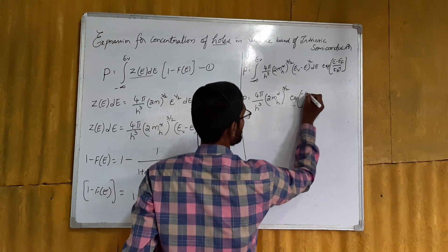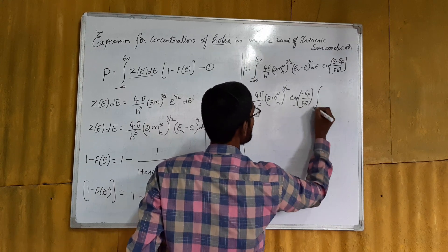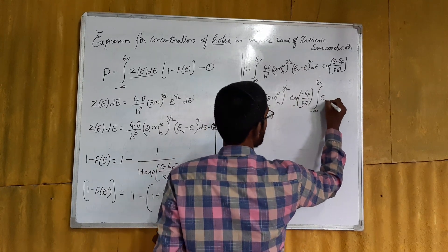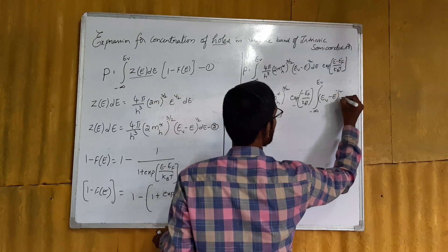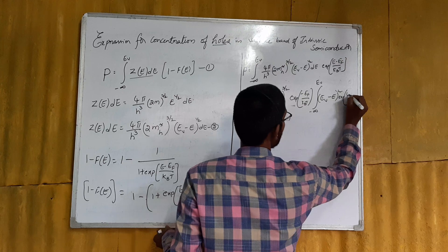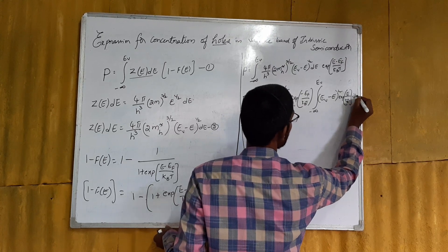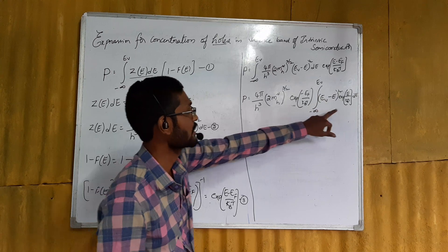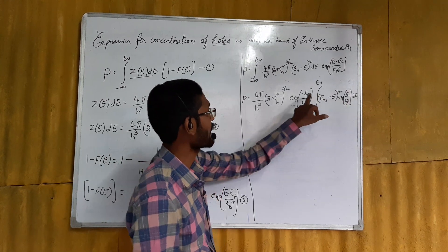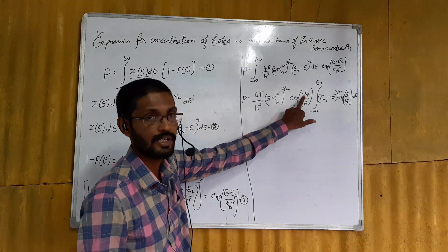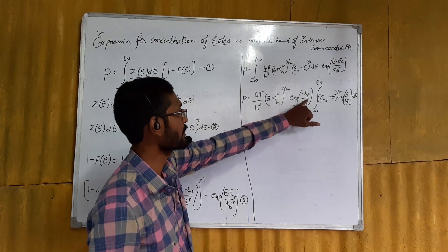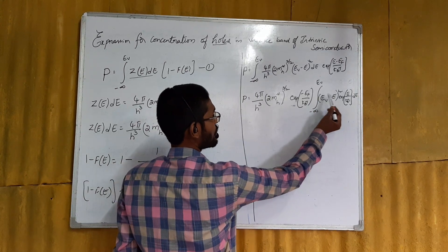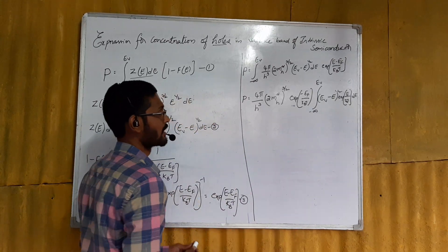We get exp(-Ef / kBT) multiplied by the integral from minus infinity to Ev of (Ev - e)^(1/2) × exp(e / kBT) de. We have taken exp(-Ef / kBT) outside the integration because Ef is a constant — the Fermi energy level of the intrinsic semiconductor is constant at any temperature. The remaining integral runs from minus infinity to Ev with (Ev - e)^(1/2) × exp(e / kBT) de.